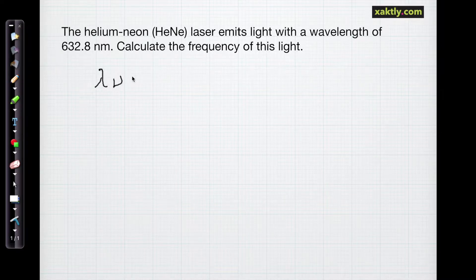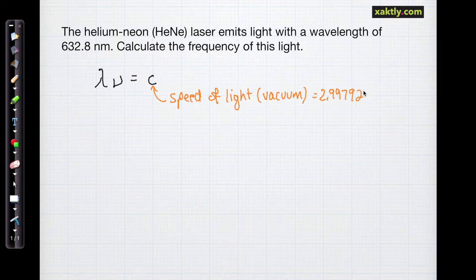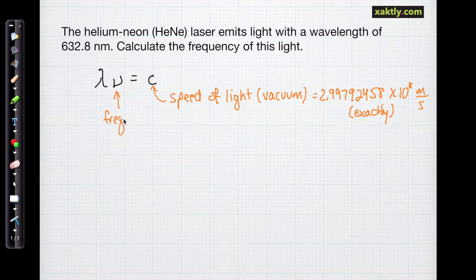Let's start by writing the relationship. Remember it has these Greek letters: lambda times nu is equal to c. And when we're dealing with light, c is the speed of light in vacuum which is 2.99792458 times 10 to the eighth meters per second exactly. I used to have a job where I needed to know that. Nu is the frequency in hertz, which is reciprocal seconds or one over seconds. And lambda is the wavelength in meters.